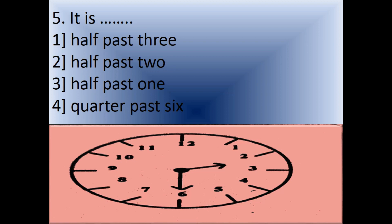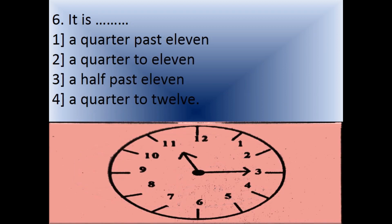Question 5: It is dash. Look at the clock carefully. It's 2 hours and 30 minutes. In English, how do we say this? Options: 1) Half past 3, 2) Half past 2, 3) Half past 1, 4) Quarter past 6. The correct answer is option 2, half past 2. That means 2:30.